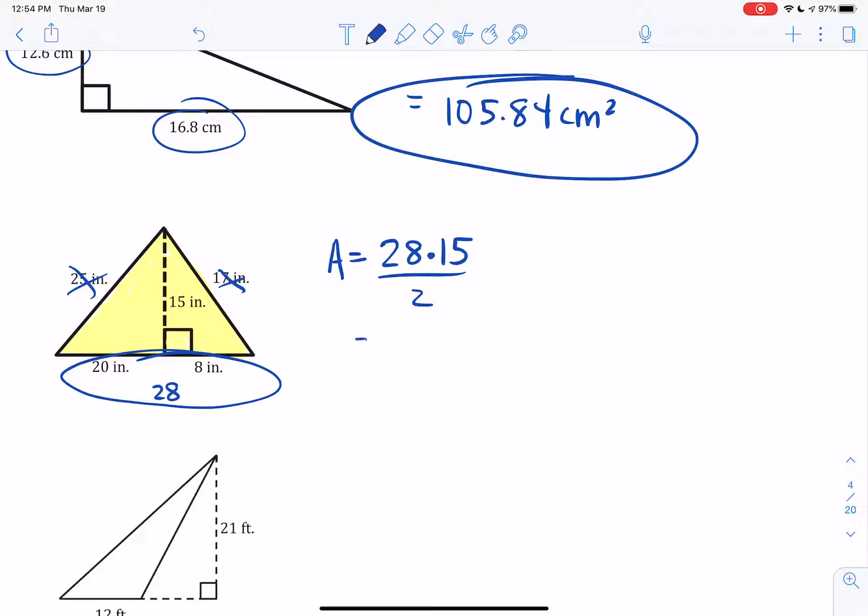28 times 15 divided by 2. The answer, use your calculator, guys. 210 inches squared. There we go.